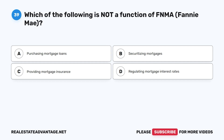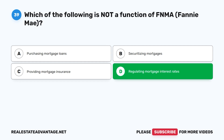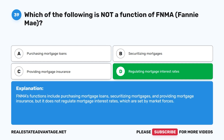Question 39: Which of the following is NOT a function of FNMA (Fannie Mae)? A. Purchasing mortgage loans. B. Securitizing mortgages. C. Providing mortgage insurance. D. Regulating mortgage interest rates. The correct answer is D: Regulating mortgage interest rates. FNMA's functions include purchasing mortgage loans, securitizing mortgages, and providing mortgage insurance, but it does not regulate mortgage interest rates, which are set by market forces.